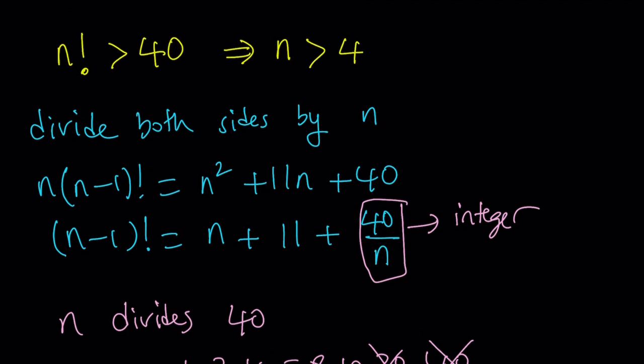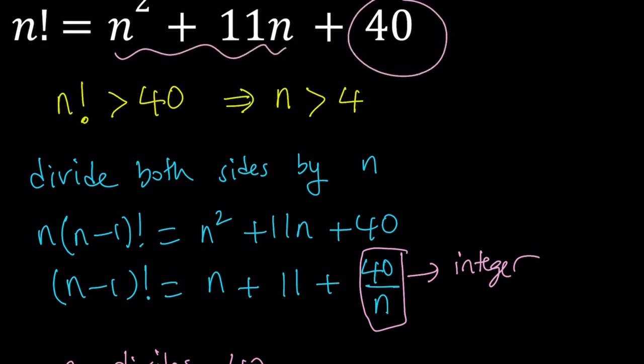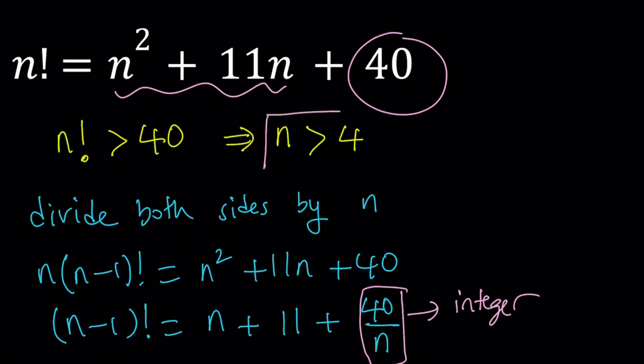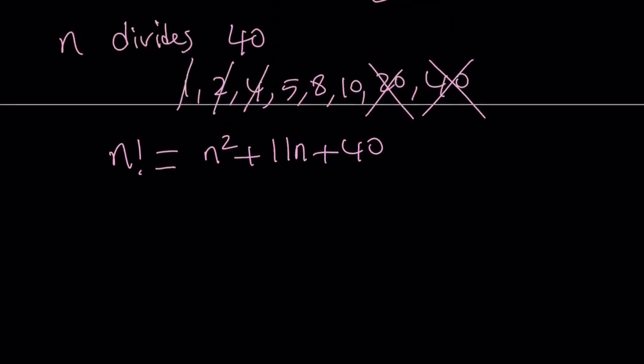Remember, we had a condition. When we looked at the value of n factorial on the right-hand side, we noticed that since these are non-negative, the n factorial had to be greater than 40, which means n is greater than 4. So that kind of gives us a nice lower bound. So we're not going to consider anything less than or equal to 4. 1, 2, and 4 are gone. So we pretty much are left with 5, 8, and 10.